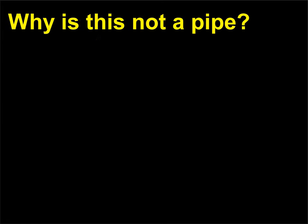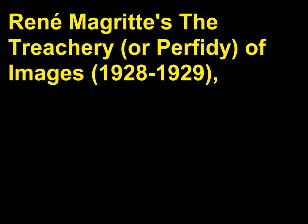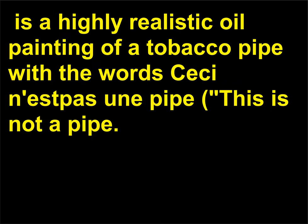Why is this not a pipe? René Magritte's The Treachery, or Perfidy, of Images, 1928–1929, is a highly realistic oil painting of a tobacco pipe with the words Ceci n'est pas une pipe — this is not a pipe — painted below.